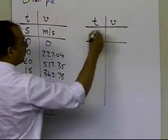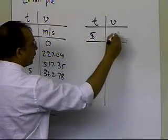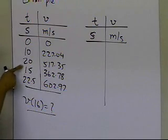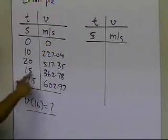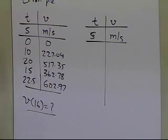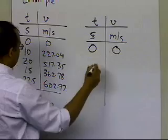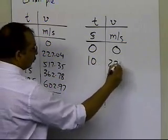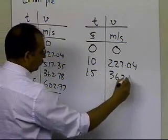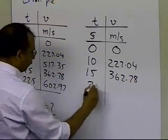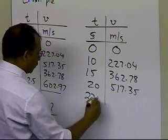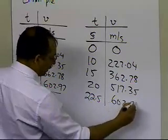So I'm going to rewrite this particular data here. So time, velocity, seconds, meter per second. So the only part which I have to rewrite is because I will switch 15 to 20, and that's all I have to do, switch this data pair with this data pair, and I will have it in ascending order. So I'm going to write it down here, 0, 0, 10, 227.04, then 15, 362.78, then 20, 517.35, and 22.5 is 602.97.